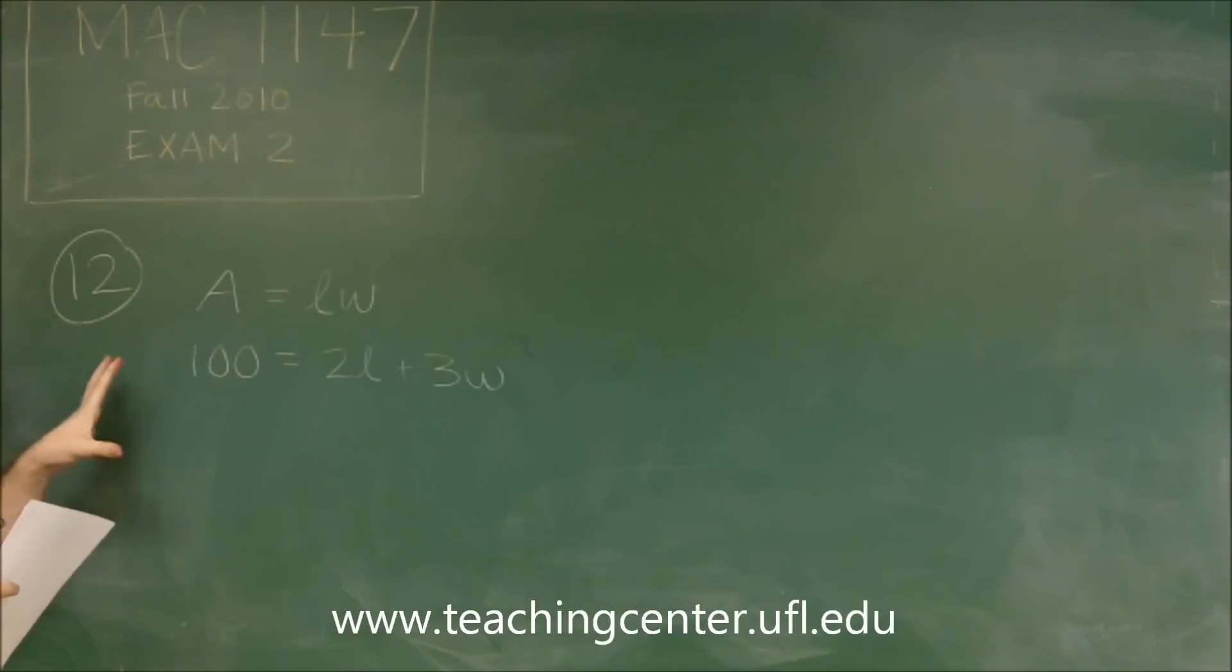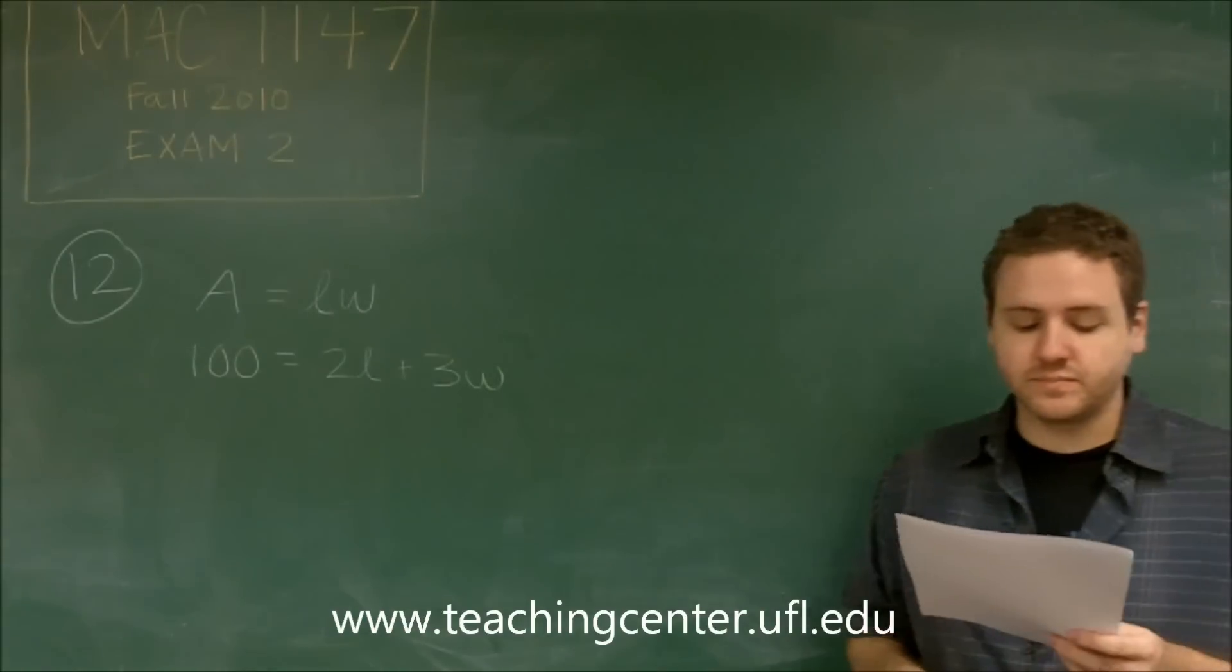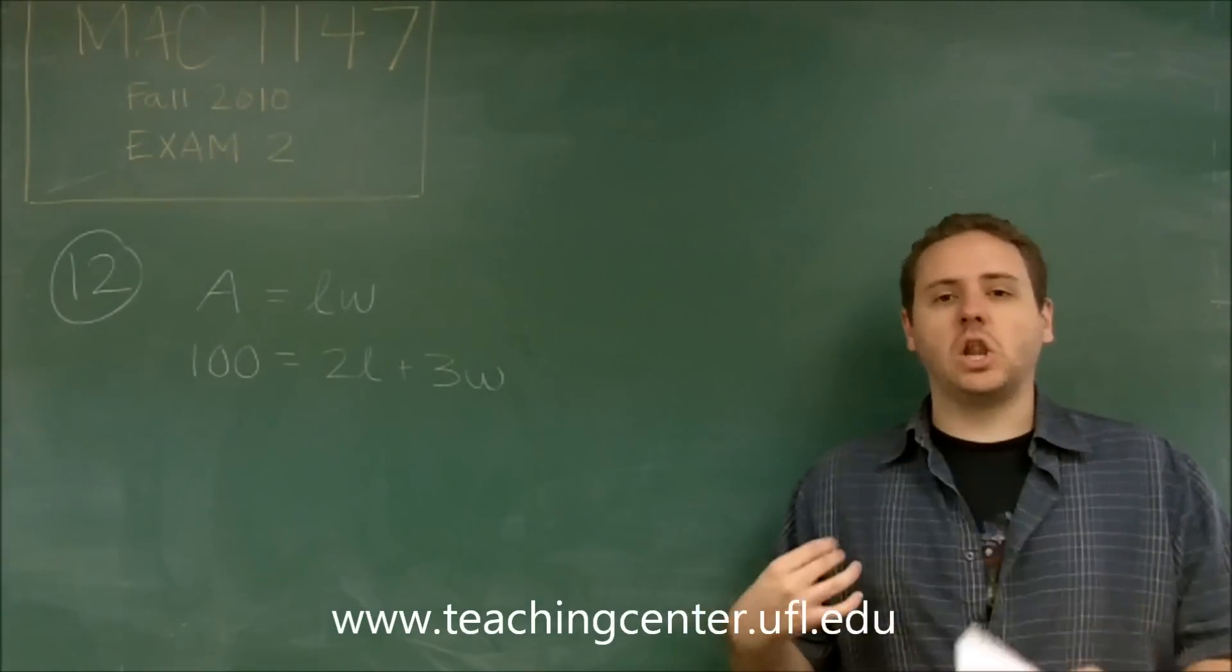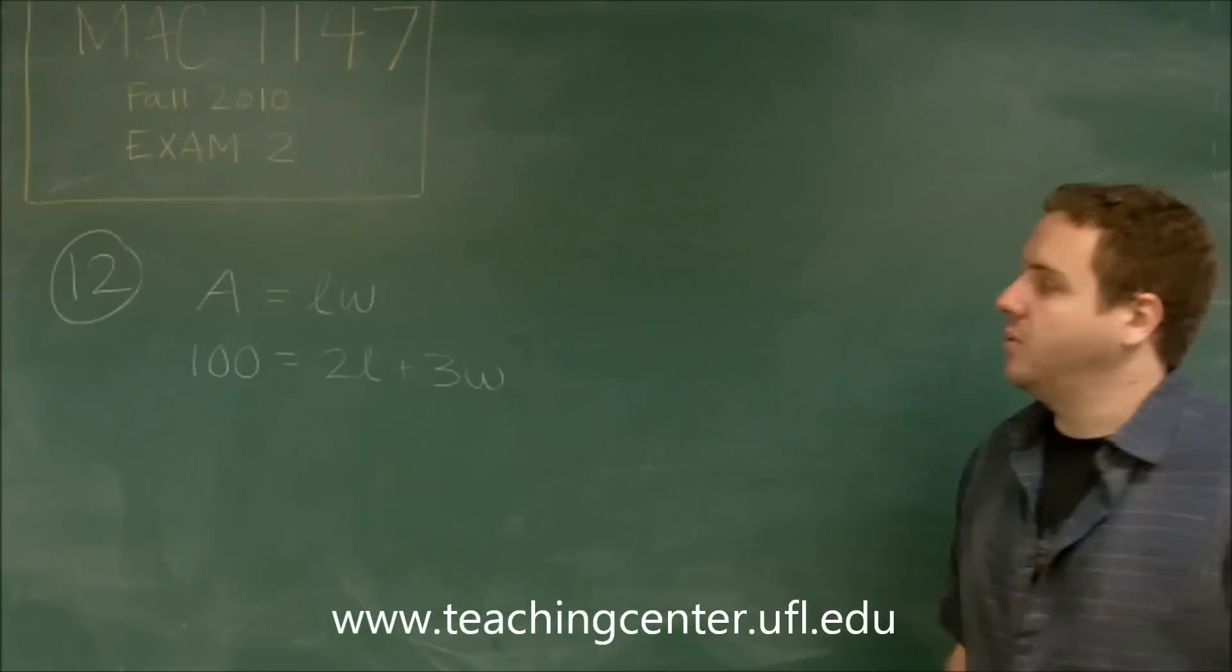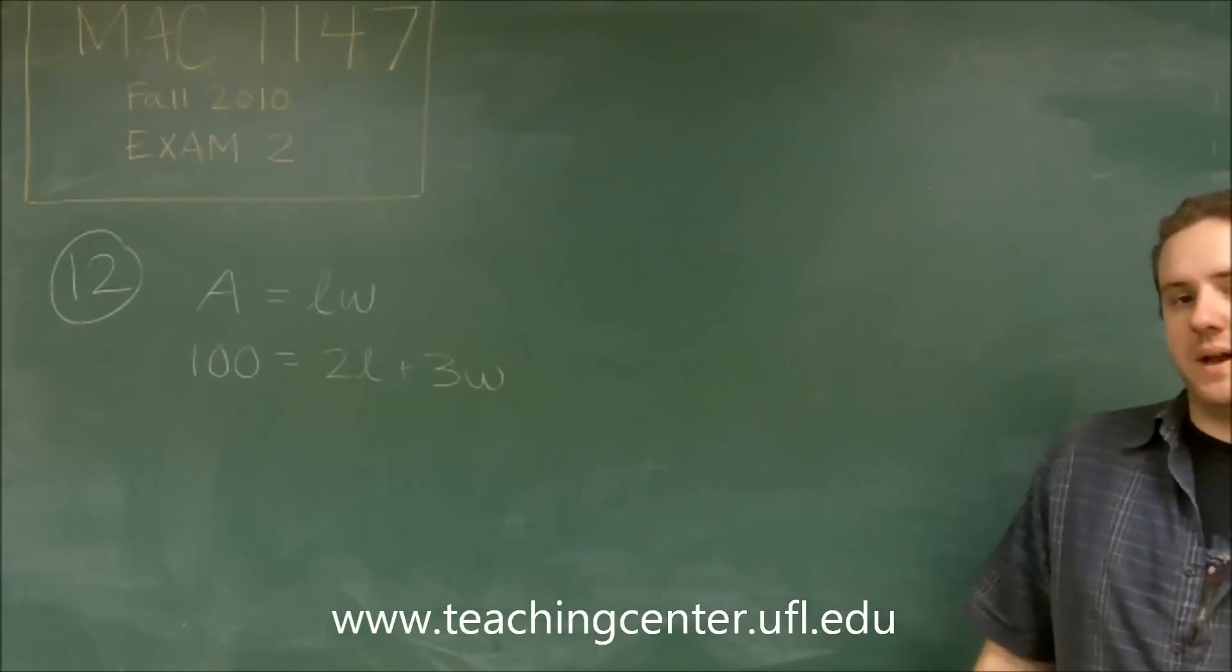So these two equations are what you can make from the information given to you in the problem. So we want the largest possible area. So we want A to be as big as possible. Well, writing it as L times W is not going to allow us to do that.